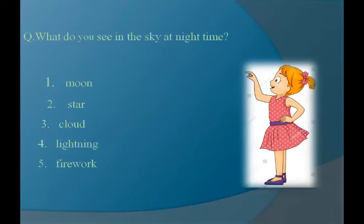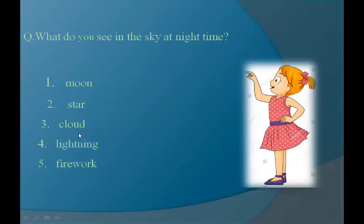The second is star. The spelling is S-T-A-R, star. We see stars twinkling in the sky at nighttime — we cannot see stars at daytime. Stars sparkle in the sky and look so beautiful. The next is cloud: C-L-O-U-D, cloud. We see cloud in the sky at daytime as well as nighttime.